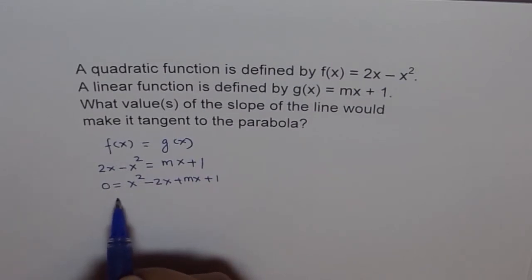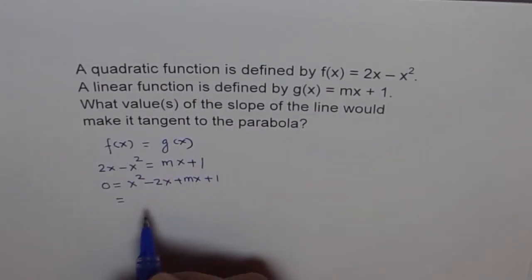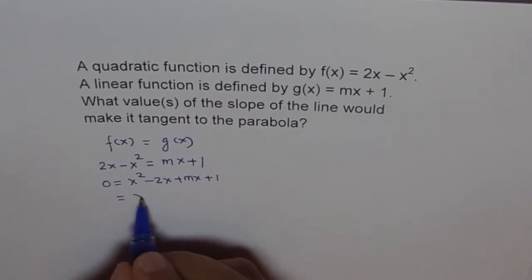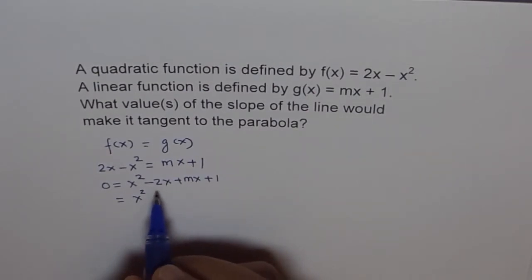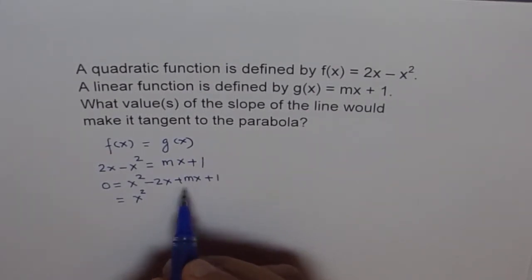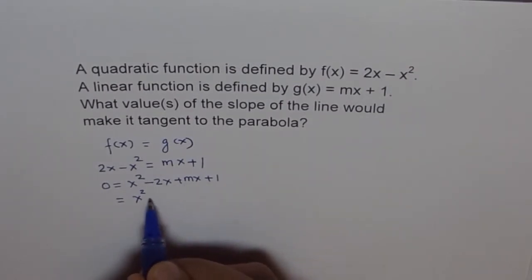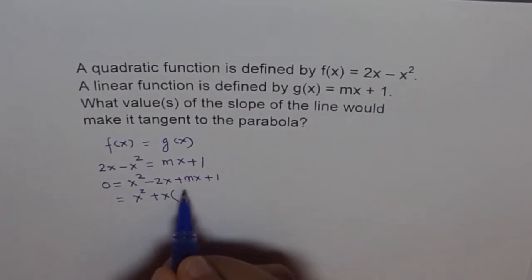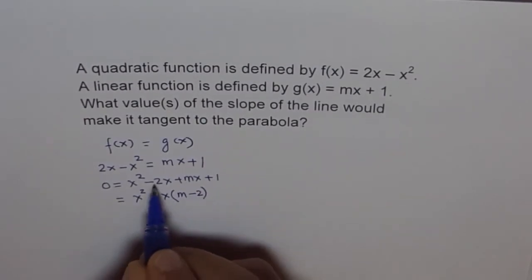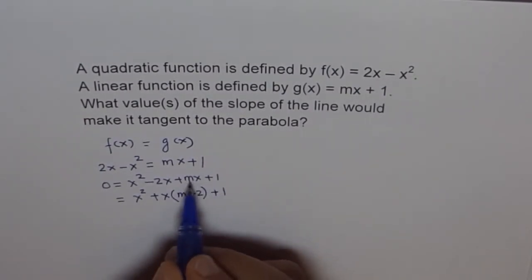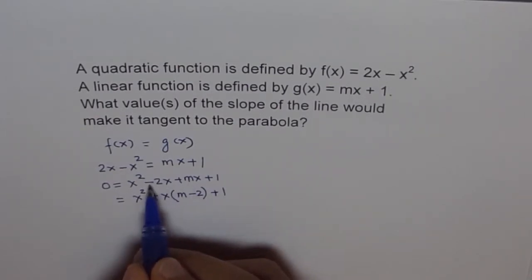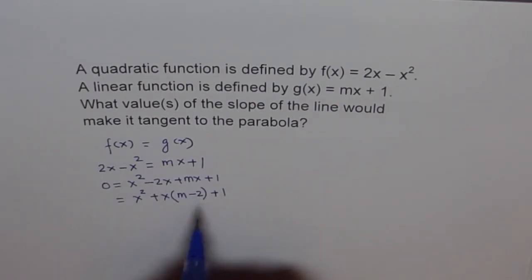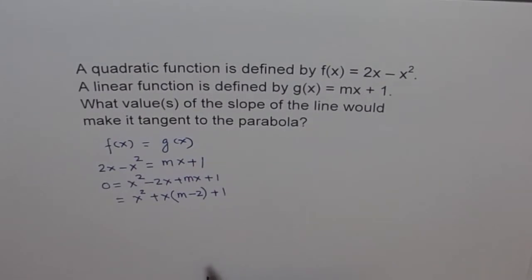Now we can factor out x from the middle terms. We reorganize: x² + (m - 2)x + 1. Taking x as a factor from the linear terms, we get m - 2 from combining mx and -2x. So the quadratic we get is x² + (m - 2)x + 1 = 0, where a = 1, b = (m - 2), and c = 1.